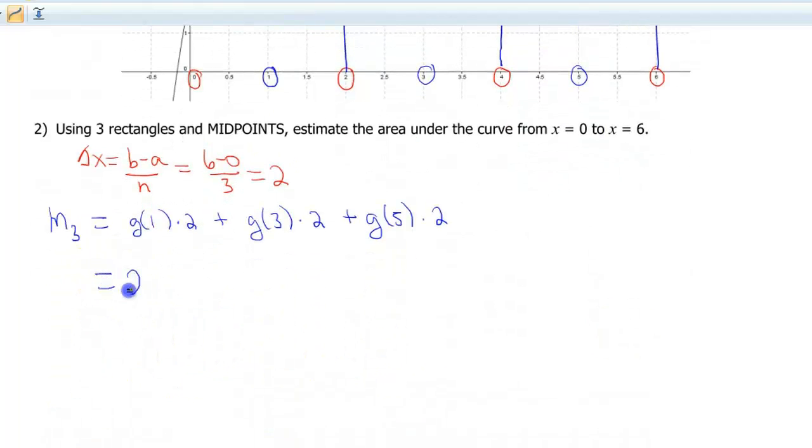So again, I'm going to go ahead and factor out that 2, just so I don't have quite as many messy calculations here. G of 1, I estimated to be 5.6788, so that's my g of 1. G of 3, I estimated to be 3.4936. And then g of 5, I estimated to be 2.3369. Then when you crunch all those numbers out, I got a grand total of 23.0186.